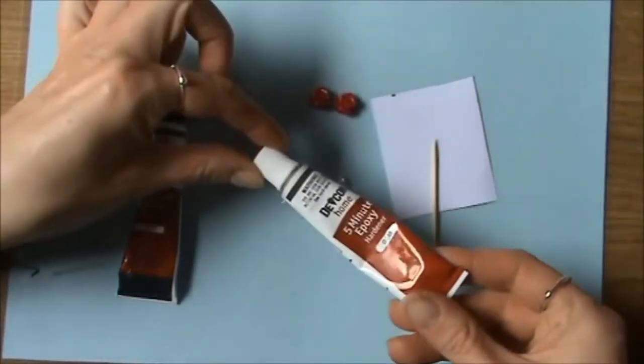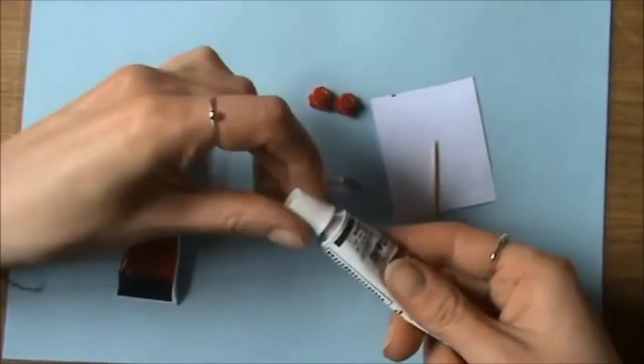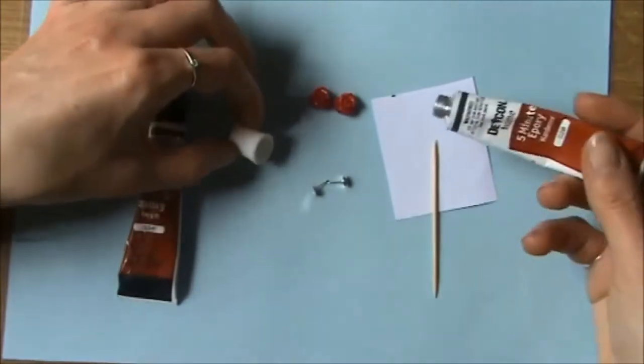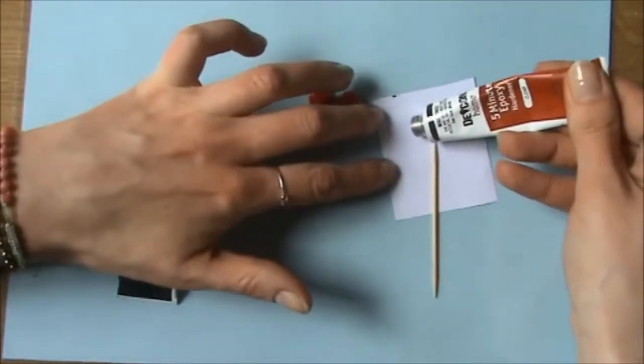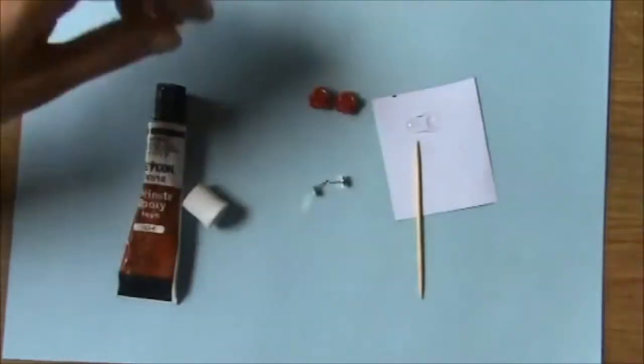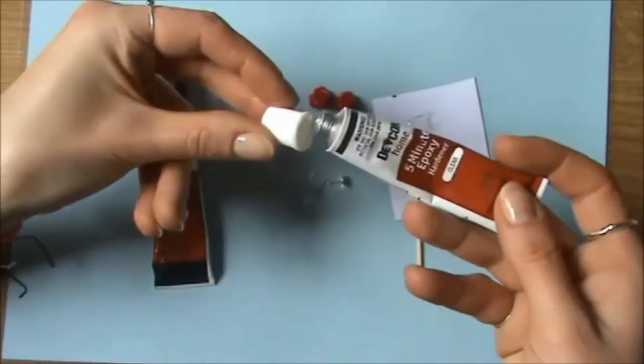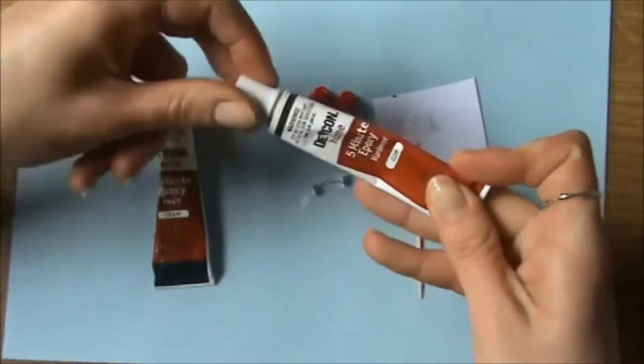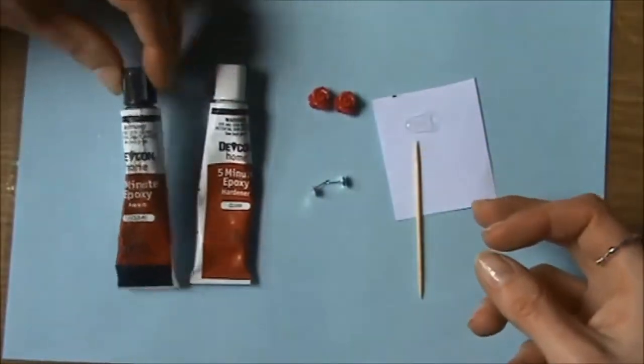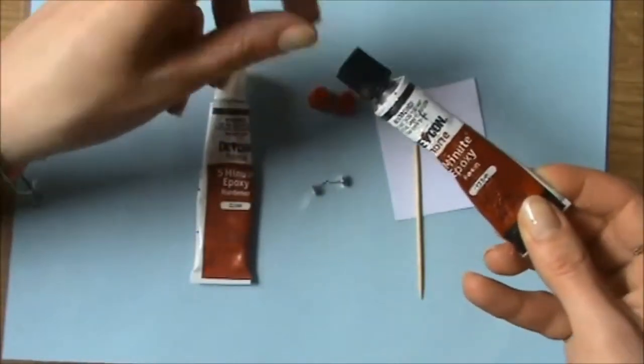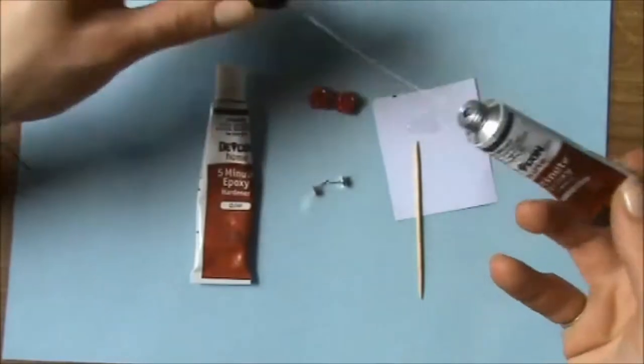We're going to go ahead and take - it doesn't matter which tube you start with to be honest - so I've got the white tube which was the hardener and I'm just going to squeeze out a blob onto my paper. It's very important that you always put the right lid back on the right tube because when the two halves meet they create a chemical reaction and if you knock that lid off, it would set hard.